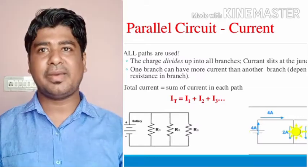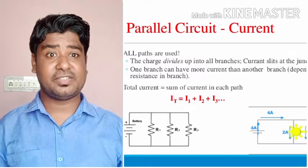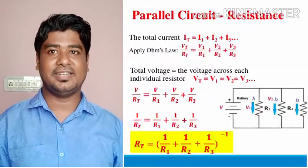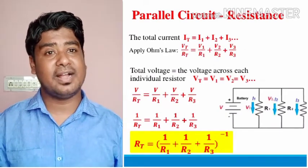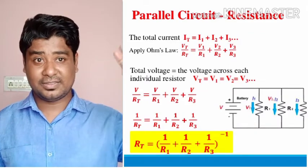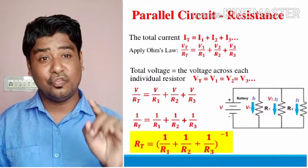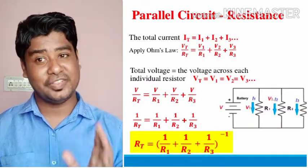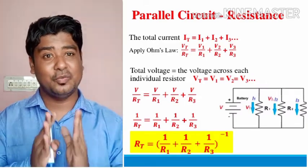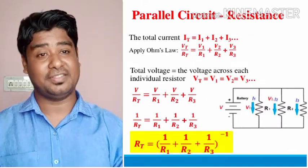Let's check mathematically what parallel combination gives us. As we have V = IR, and since potential difference is constant here, let's work with current. According to Ohm's law, I = V/R. So the current at the first resistance is I1 = V/R1, because V is constant. Then I2 = V/R2 and I3 = V/R3.